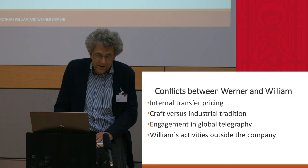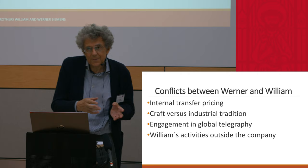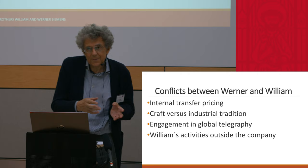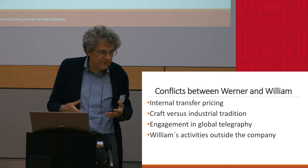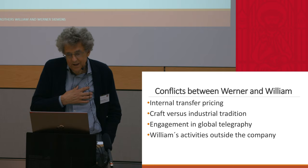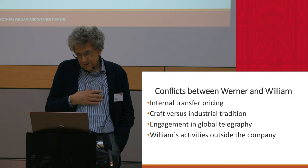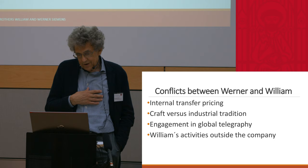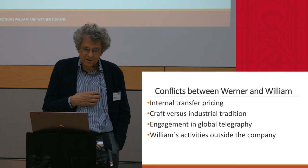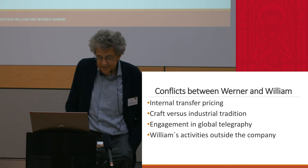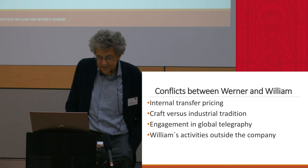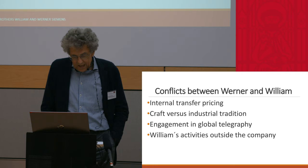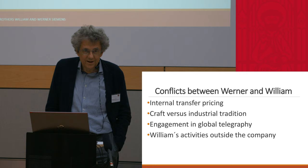My paper is on cultural differences between England and Germany, and you can see this in the many conflicts which emerged since the founding of the company between the Berlin branch — the German branch — and the English branch, that is between Werner and William. The first point was that, in William's opinion, the products made in Germany and transported to Great Britain were too expensive, and it would be cheaper to manufacture them in England.